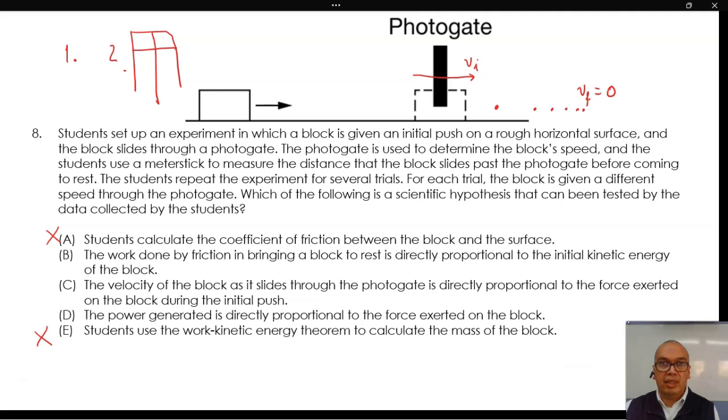On one hand, they have a set of different speeds. On the other hand, they have a set of different displacements. Any hypothesis that we try to validate has to come from the relationship between these sets of measurements.